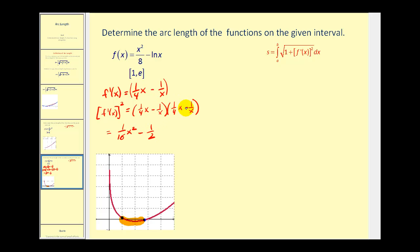And then negative one over x times negative one over x will be positive one over x squared. So now we do have the derivative squared.